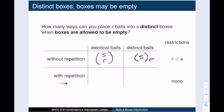Now let's allow for repetition. So I can put more than one ball in a box. When I am placing pool balls, the answer is s to the r. This is because each ball has s possible locations. By the product principle, there are s to the r ways to place these r balls.